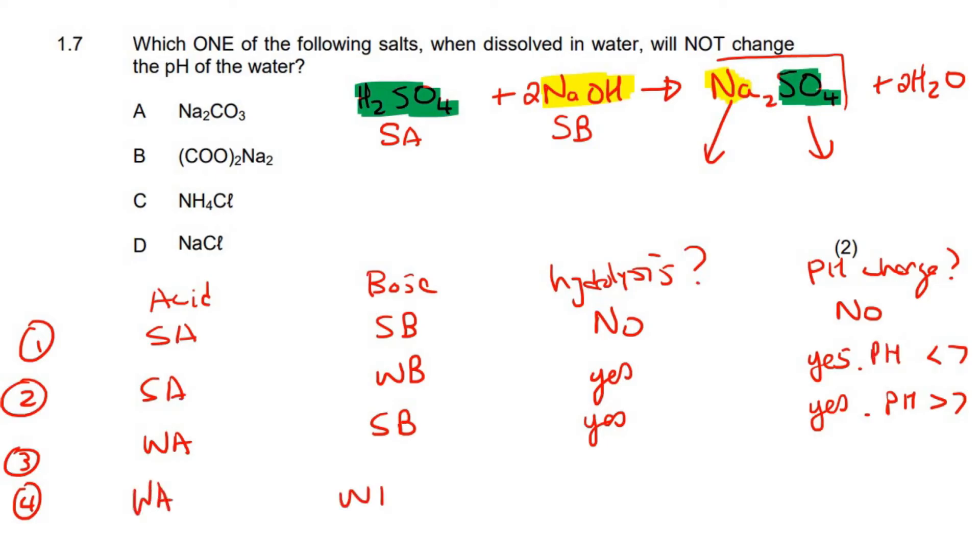Then if you have a weak acid and a weak base, will hydrolysis happen? Yes. But it happens for both of these. And so will the pH change? No, because it cancels out. So the pH will remain seven, just like over here. And as I said, you've got to watch that video that I've already made. Otherwise, what I'm saying here is going to be absolute Greek.